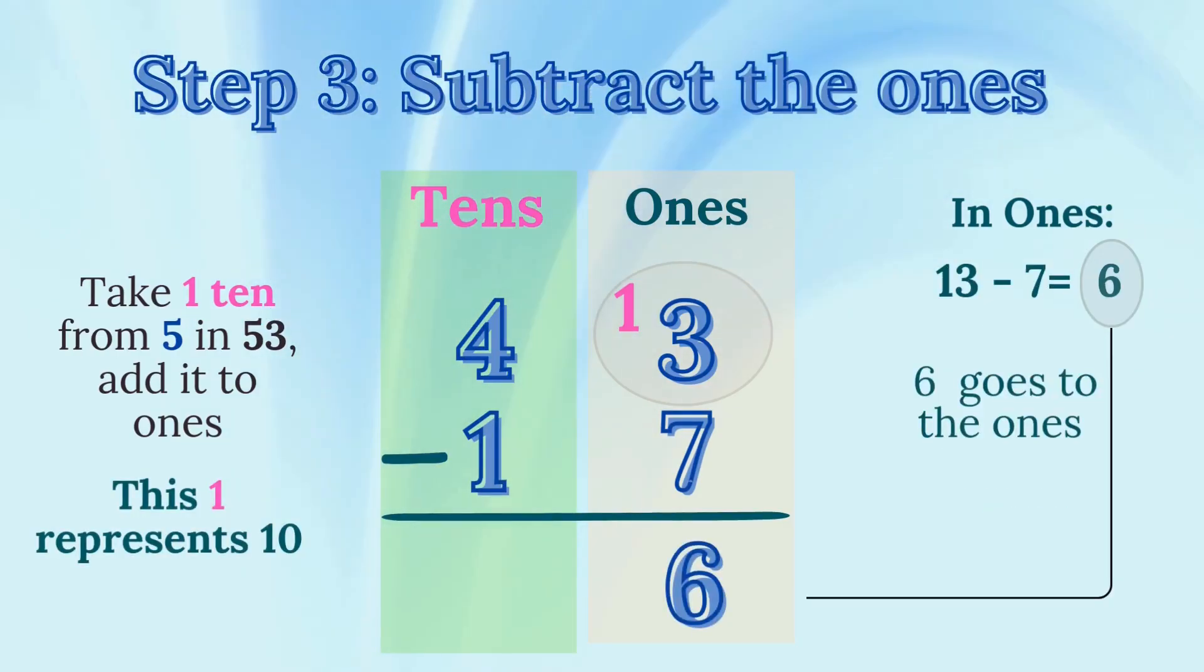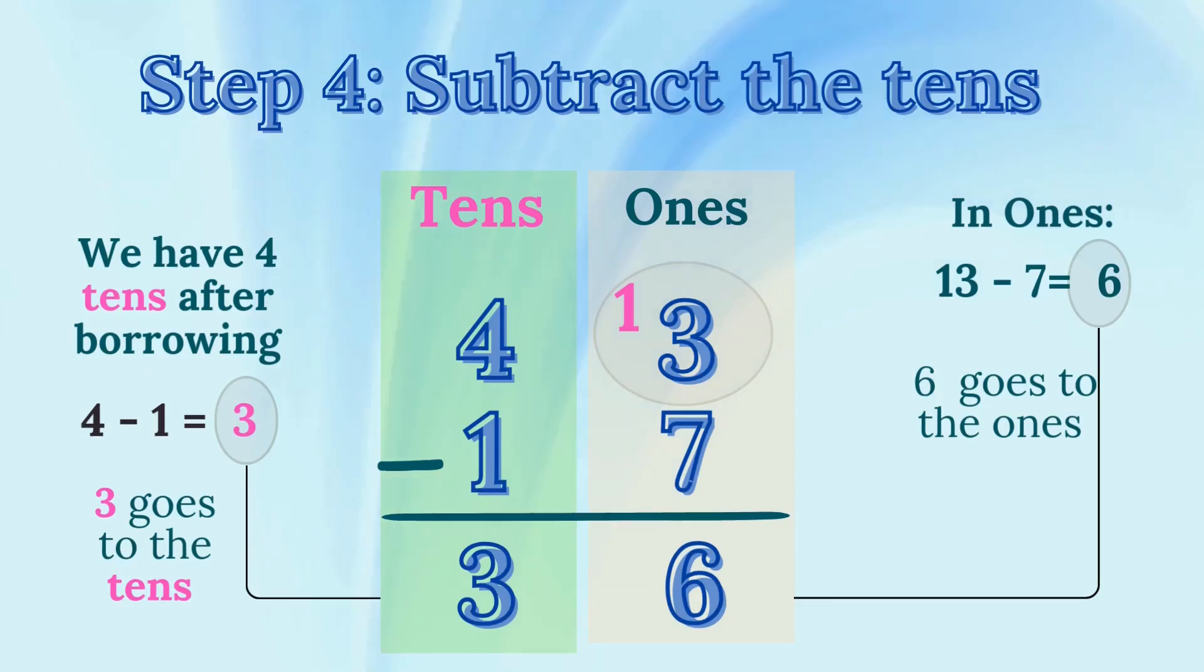Step 3. Subtract the ones. 13 minus 7 equals 6. 6 goes to the ones place of the answer. Step 4. Subtract the tens. Now, in the tens place, we have four tens after borrowing from 53. We subtract one 10 from the four tens. 4 minus 1 equals 3. So, 3 goes to the tens place of the answer.